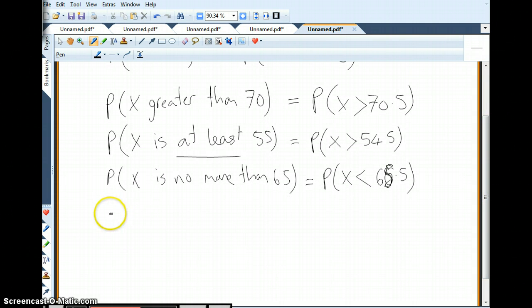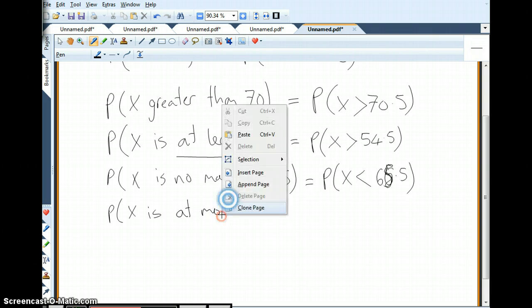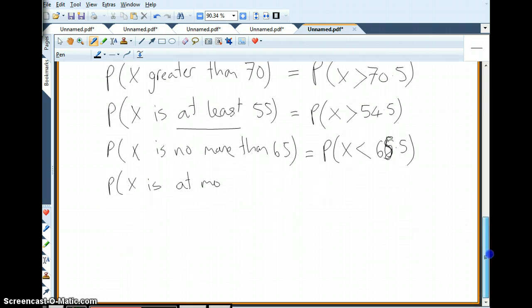This one. The next one reads x is at most 80. At most 80. At the most 80. What would that translate to? Could it be 80? Yes. So, less than 80.5.